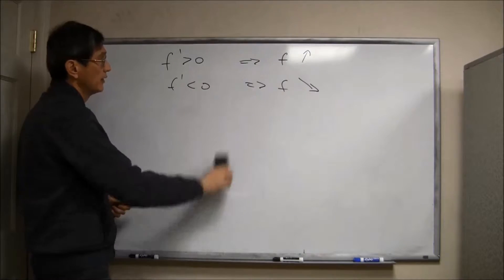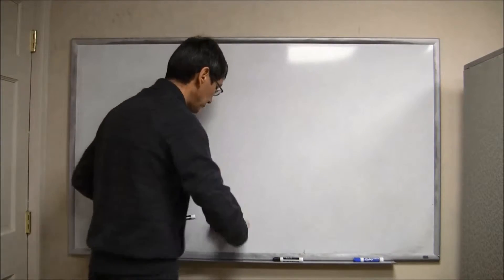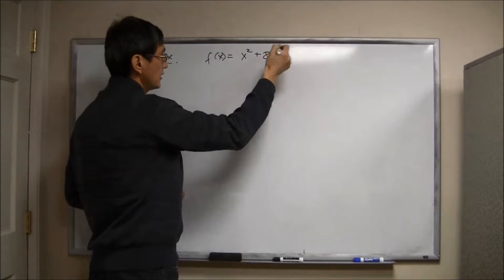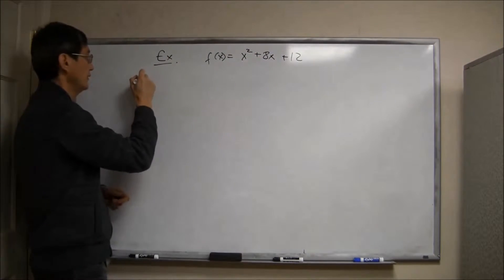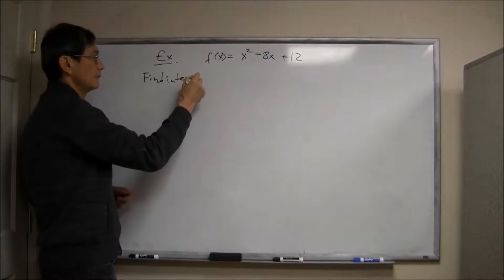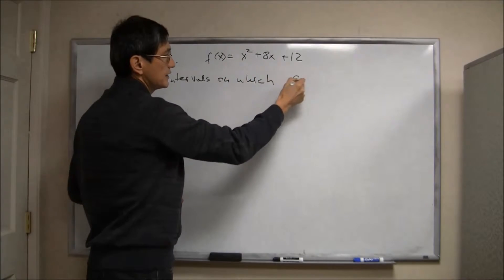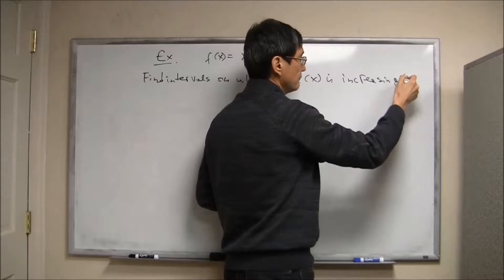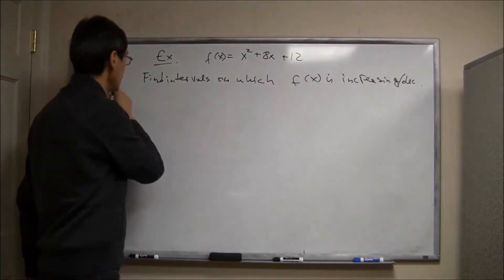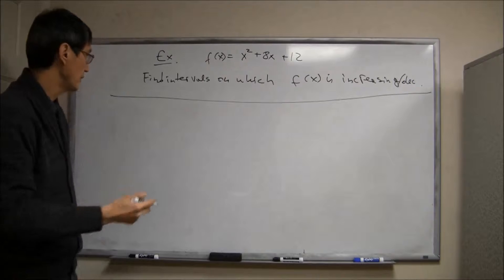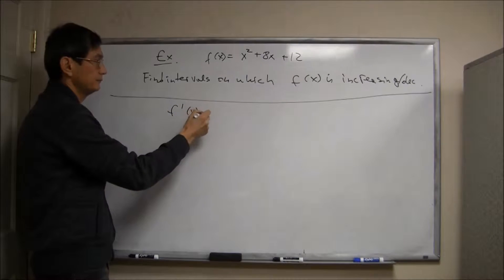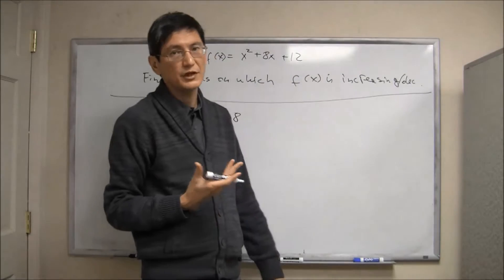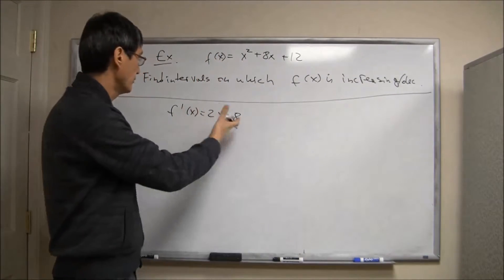Let me illustrate that on a simple example of a quadratic function. Say we have function f which is x squared plus 8x plus 12, and we want to find intervals on which this function is increasing and also intervals on which it is decreasing. First step is to find the derivative. It's a binomial, so derivative of x squared is 2x, derivative of 8x is 8, so the derivative is 2x plus 8.